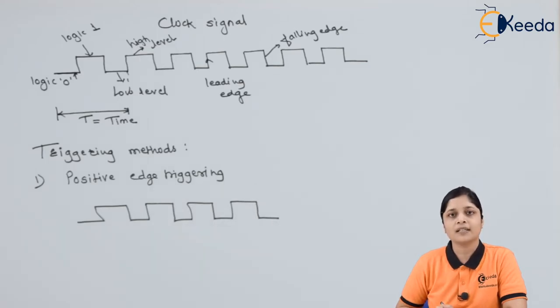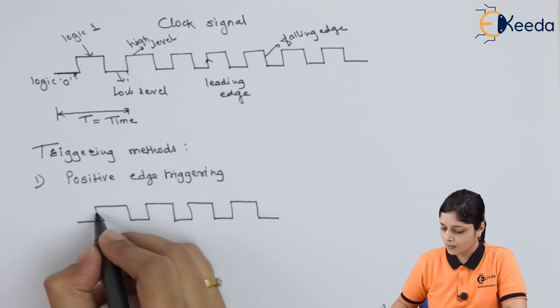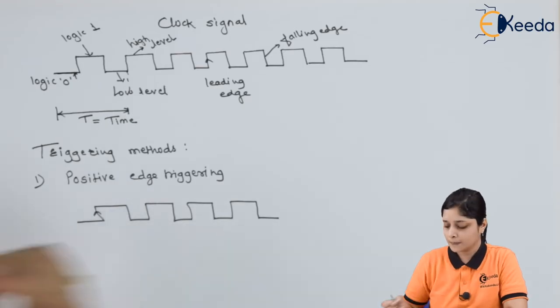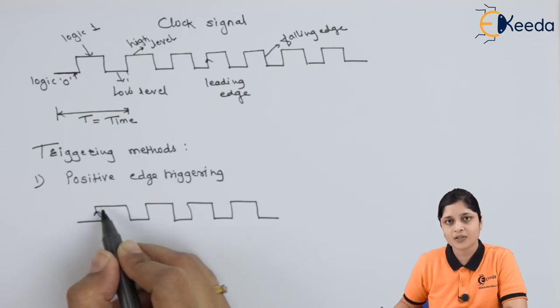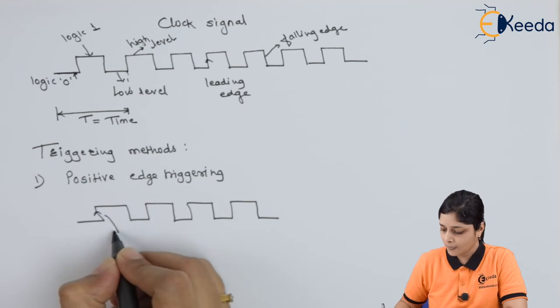Now, what is positive edge triggering? Whenever your signal moves from low level to high level, it is called positive edge triggering. The name of this triggering is positive edge.